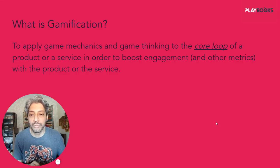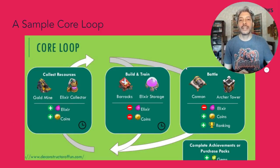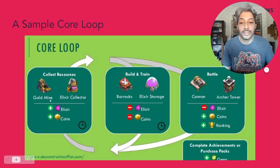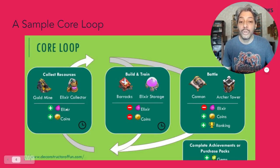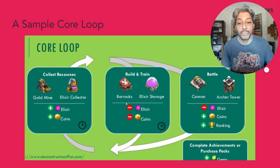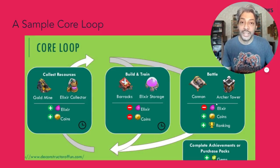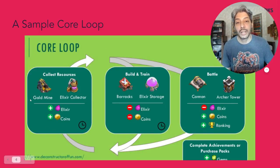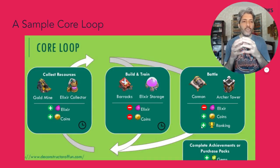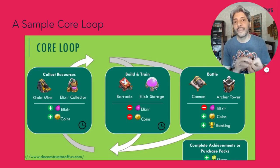Let's talk about core loops in gaming. One of the most popular games of all time is Clash of Clans. Its core loop: you start by collecting resources — gold and elixir. Then you use those resources to build and train troops in barracks. Those troops are used in battle, where you lose elixir but gain coins and ranking. The loop continues: collect resources, build and train, battle, come back and repeat.